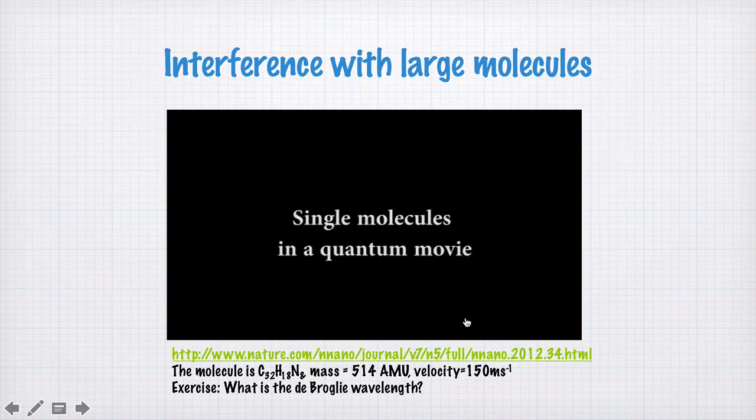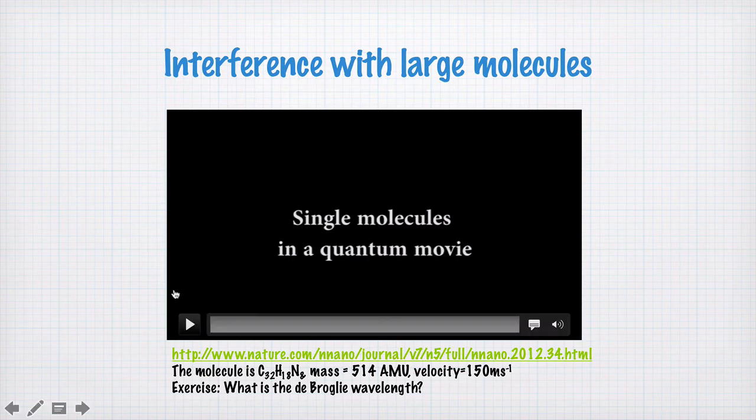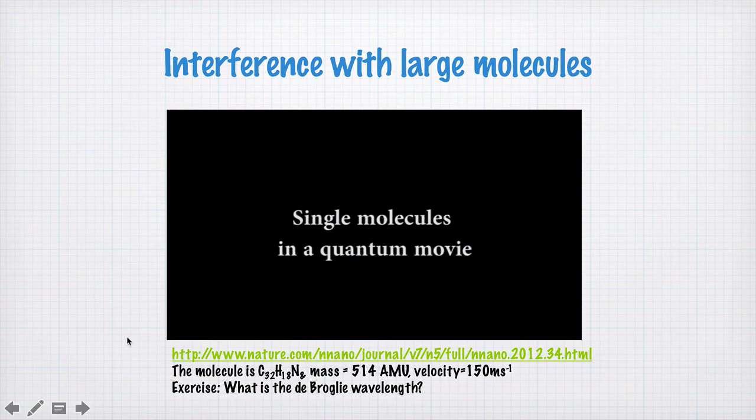Well, here is a movie showing the interference of large molecules. The molecules here are C32H18N8. That's a lot of atoms. It's got 514 atomic mass units altogether and a velocity of 150 meters per second. So the wavelength of these molecules is going to be very, very small. So we're going to need very small slits and some very sensitive measurement gear to be able to see the interference. But it has been done.